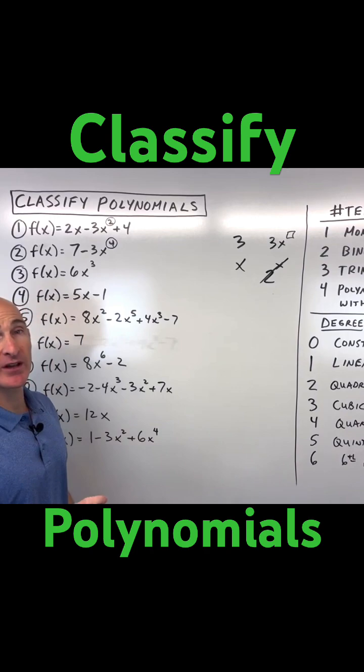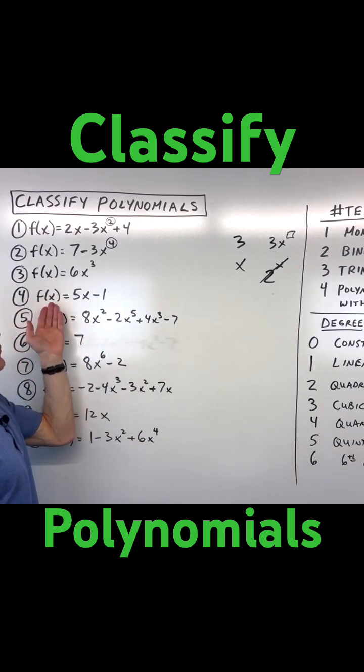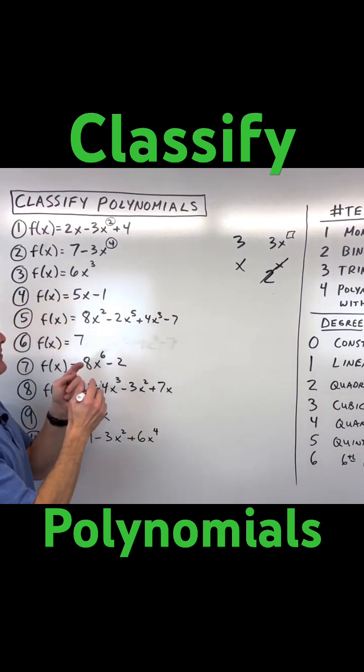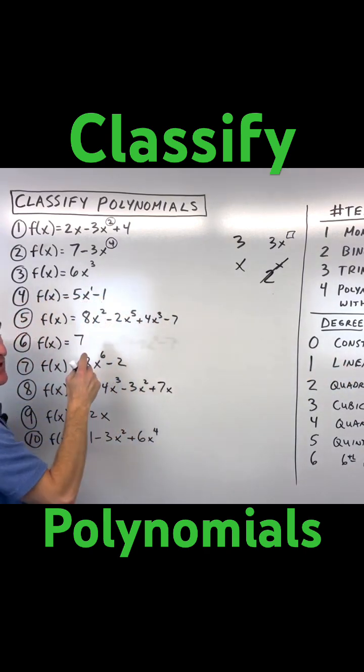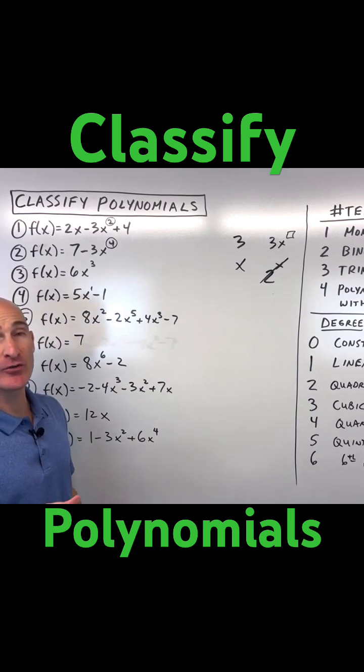So I would say cubic monomial. For number four, five x minus one, highest degree is one, so we're thinking linear, like a line. Two terms, that's a binomial, so I would say a linear binomial.